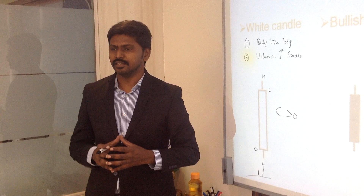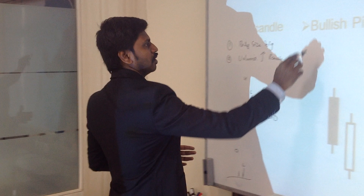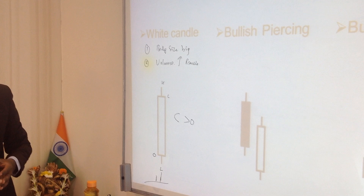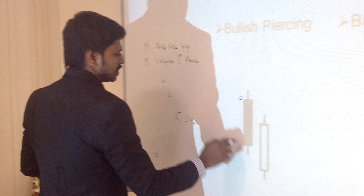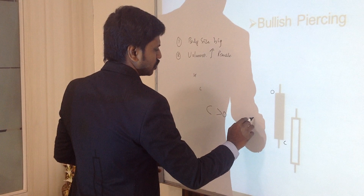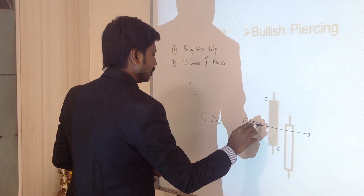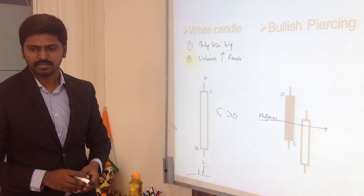Now the second pattern is the bullish piercing pattern. In this pattern, the previous day has an open and close, and the midpoint between open and close is called the median. For example, Monday's candle is negative. On Tuesday, the market gaps down.